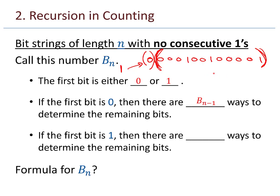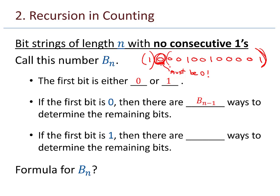The second part is trickier. If the first bit is a 1, then the second bit following the 1 cannot be a 1 — when we're talking about bits, if it's not 1 then it must be 0. So I have no choice on the second bit. But then, knowing the second bit is a 0, for the remaining n-2 bits, it can be any string so long as there are no consecutive 1s — giving b_{n-2} ways.